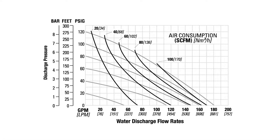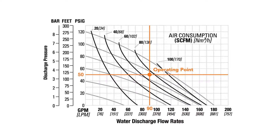The AODD pump performance curve also defines the pump's air consumption, which can be used to help size a compressor for your system and identify opportunities for cost savings. Using the same operating point — pumping 90 gallons per minute at a discharge pressure of 50 PSIG — the performance curve identifies air consumption by following the black vertical curved axis, which lies between 60 and 80 SCFM. You can expect the AODD pump's air consumption to be about 72 SCFM.